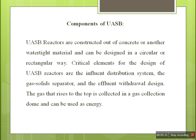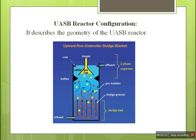Any type of watertight material, rectangular or circular in form, can be used for constructing a UASB reactor. The critical elements for the UASB reactor are the effluent distribution system, the gas-solid separation, and the effluent withdrawal device. This is the basic geometry of the UASB reactor, where they are labelled into different phases.